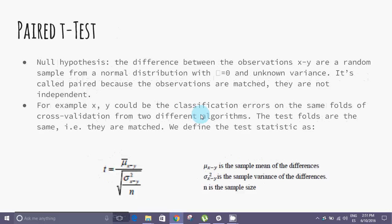Paired t-test. Null hypothesis: The difference between the observations X and Y are a random sample from a normal distribution with mean equals 0 and unknown variance. It's called paired because the observations are matched.